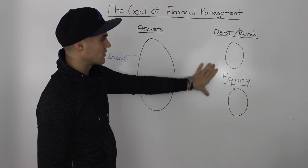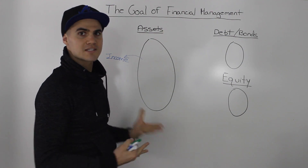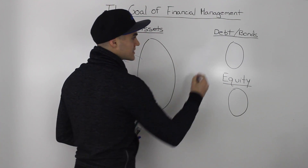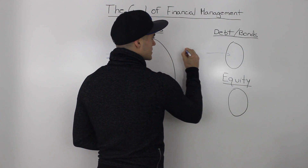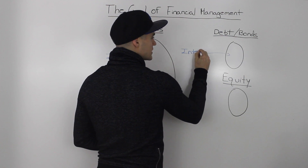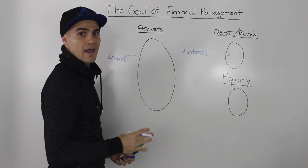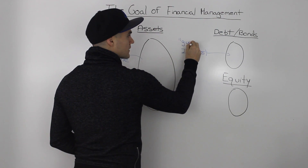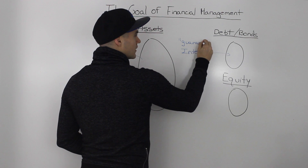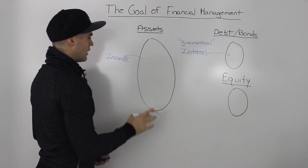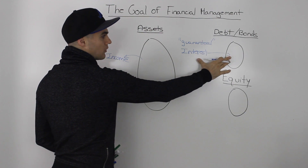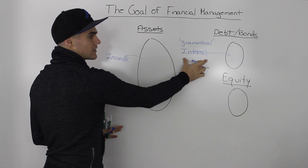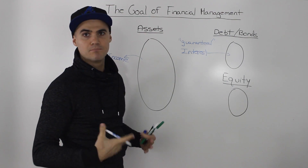But these guys aren't just going to give you free money — they're going to expect something in return. The bondholders expect interest; you have to pay them interest on the money that you borrowed, and in fact this interest is guaranteed. Your company has to be making enough income to pay the interest to the bondholders, because if it gets to a point where your company is not making enough money to pay interest, then there's going to be a bankruptcy filed.